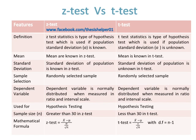The mean is known in both Z-test and T-test. The standard deviation of the population is known in Z-test, while the standard deviation of the population is unknown in T-test.